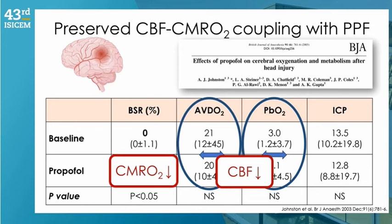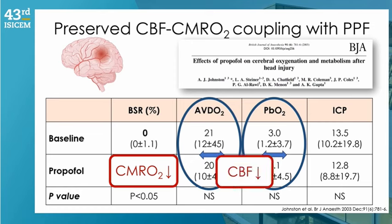In the TBI study, propofol was also hoped to help ischemic areas indicated by brain tissue oxygenation probes showing values of 3, reflecting severe cerebral hypoxia. However, after the intervention, brain tissue oxygenation did not improve and remained at 3.1. Furthermore, no difference in ICP was observed after the propofol intervention, despite the observed drop in cerebral metabolic rate.